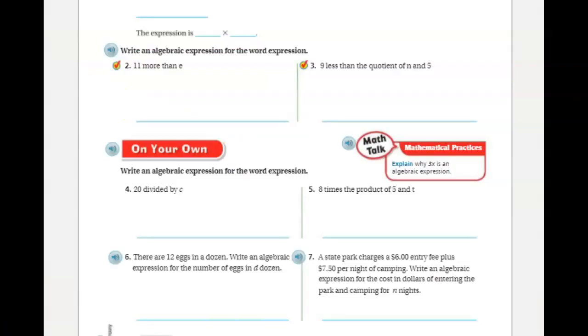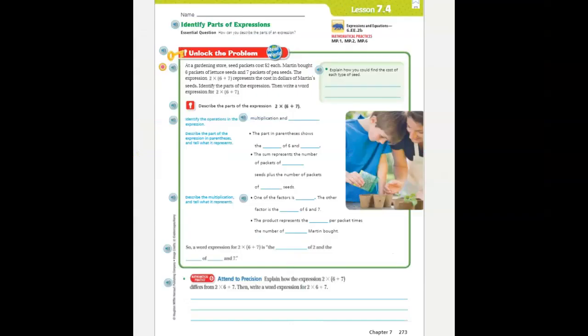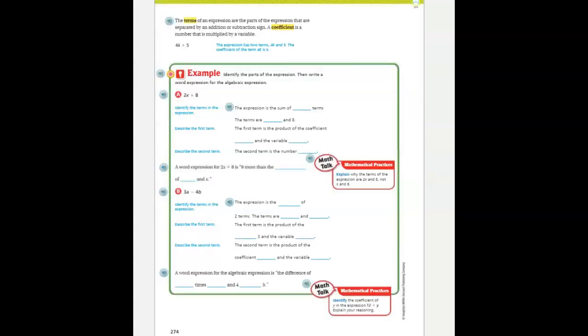In Lesson 7.3, you wrote algebraic expressions for word expressions. Now you'll be building on that. In Lesson 7.4, you'll be describing parts of the expression, and you will also be learning some new vocabulary.